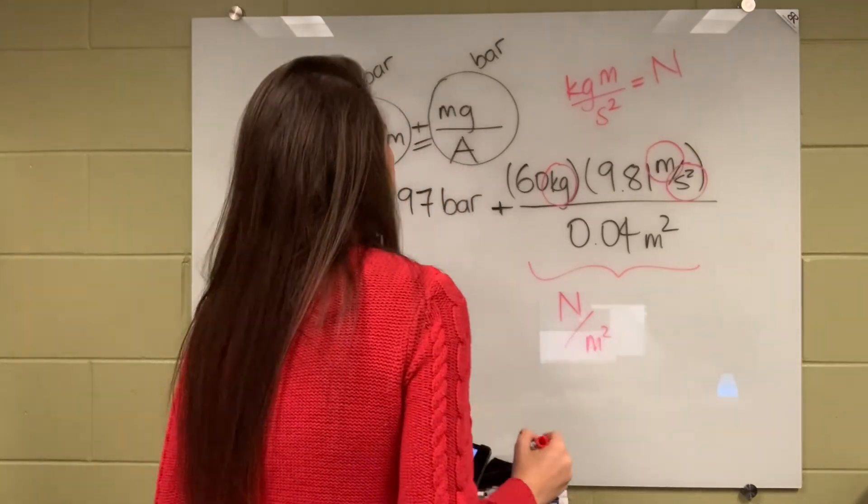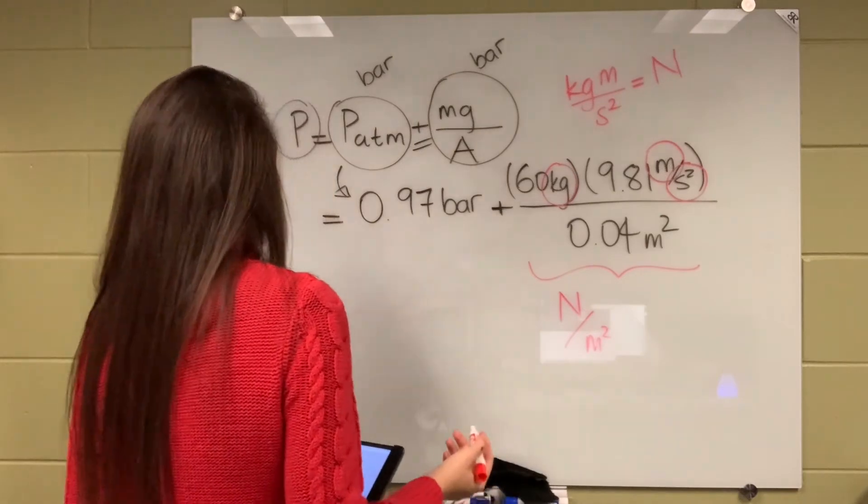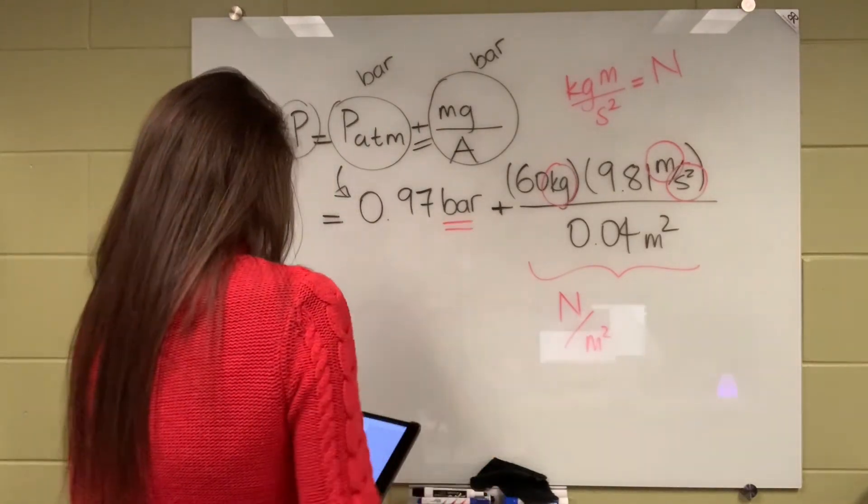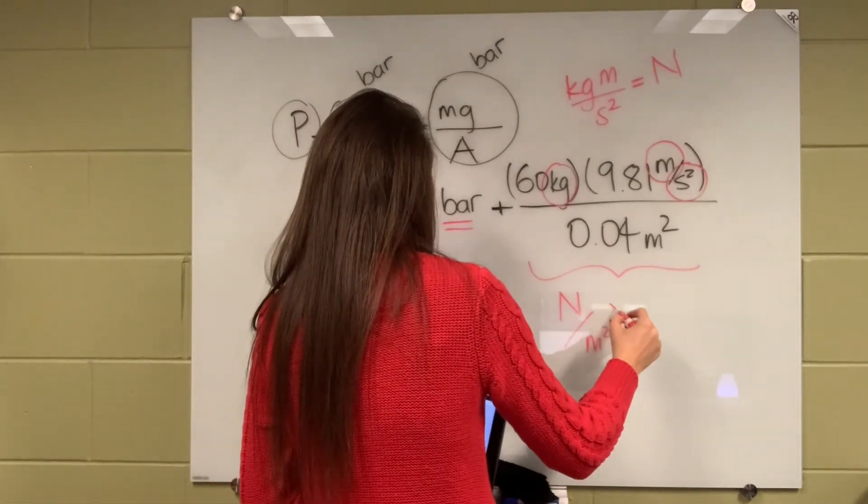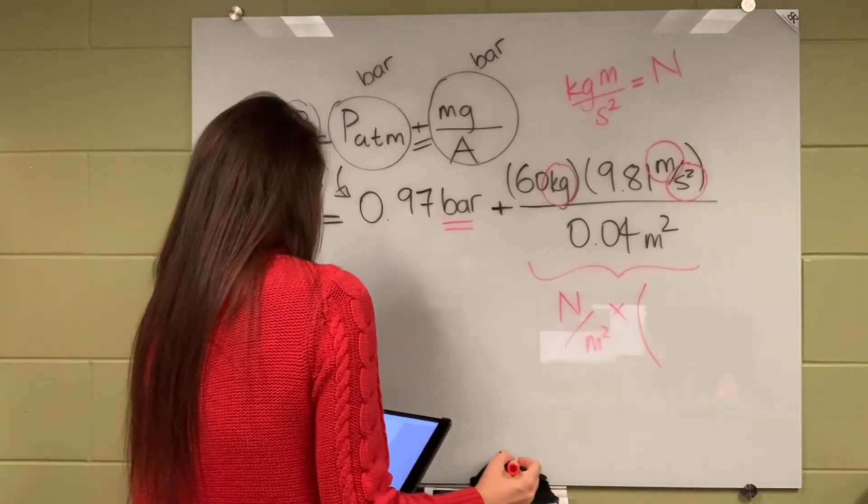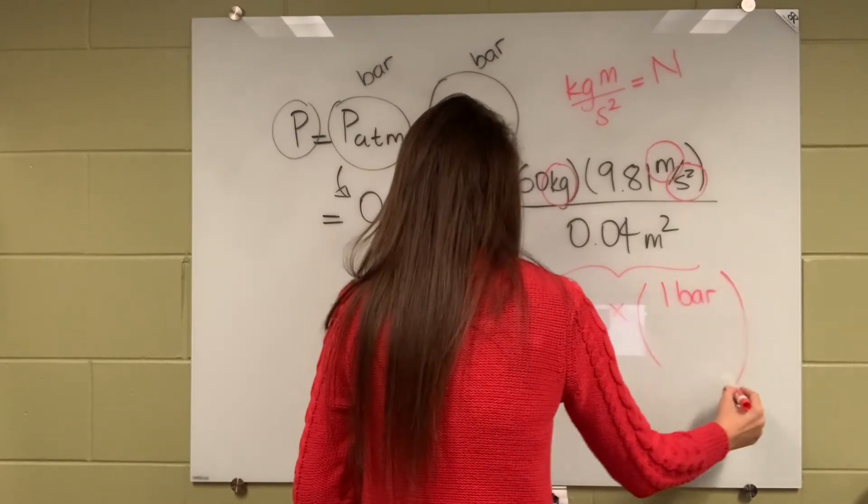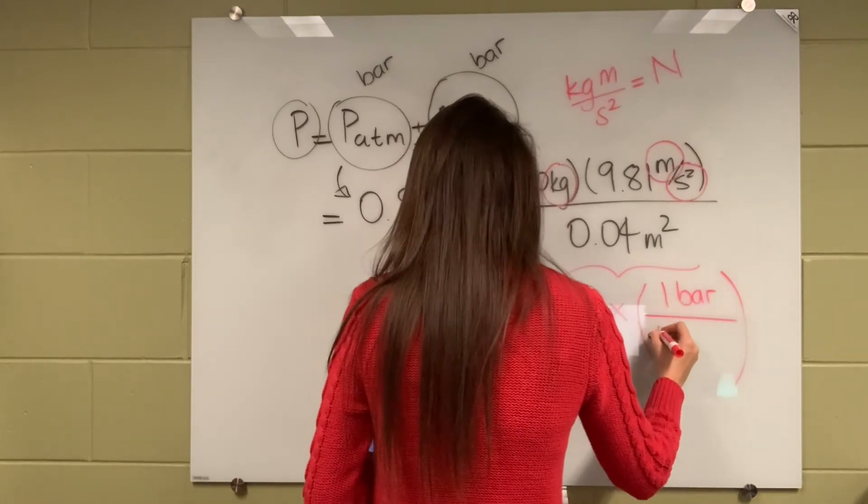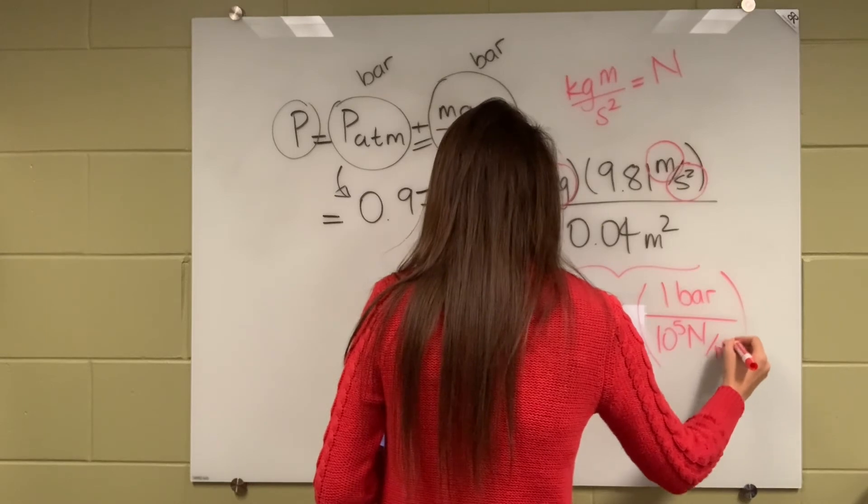So this equation is actually Newton per meter squared, which is Pascal, because it's a pressure unit. But we need it in terms of bar. Therefore, we have to multiply this with the unity conversion ratio.